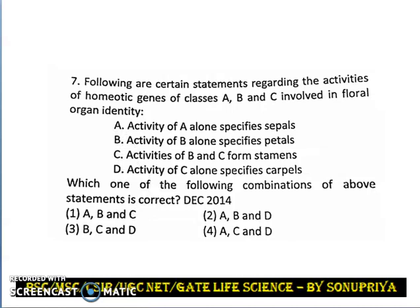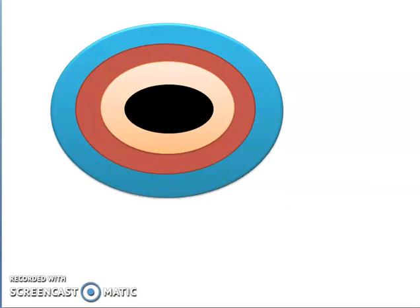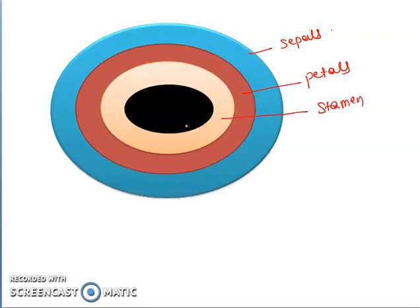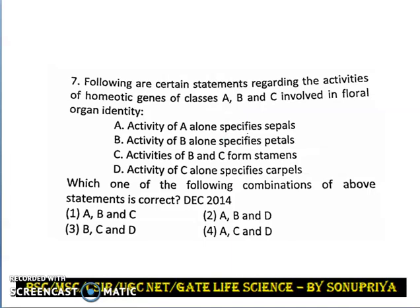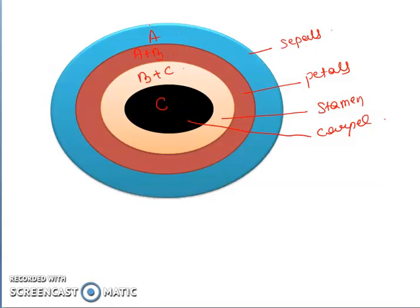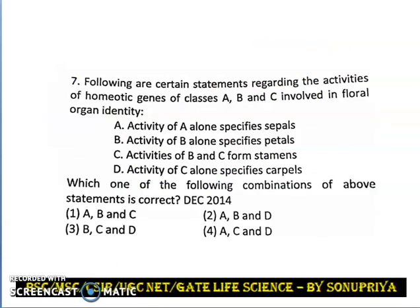Let us recall what we discussed in our previous video. There were four types of whorls: sepals, petals, stamens, and carpel. Sepals were due to class A gene alone. Petals were due to class A plus class B gene. Stamens were due to class B plus class C gene, and carpel was due to class C gene alone. Now in our question, activity of A alone specifies sepals — yes, that is a correct statement, as class A gene is responsible for sepal formation.